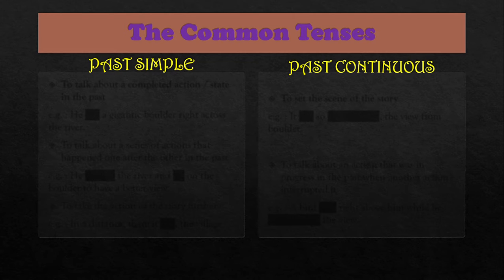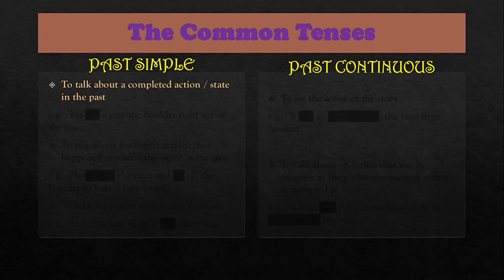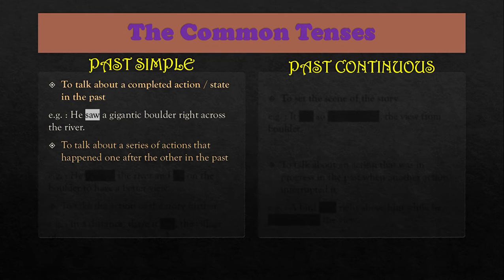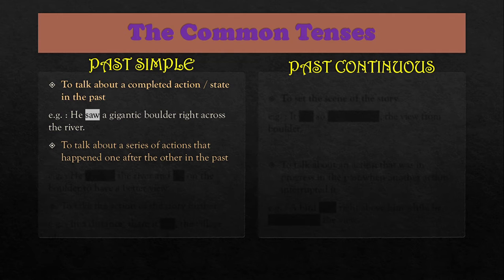We are going to use past simple basically to talk about a completed action or state in the past — things that have already happened, verb plus -ed. For example: 'He saw a gigantic boulder right across the river.' — dia terlihat batu yang sangat besar di seberang sungai.